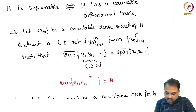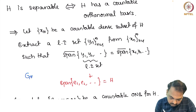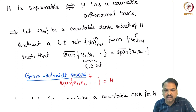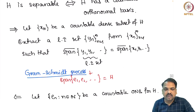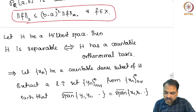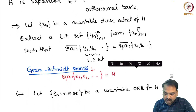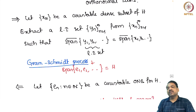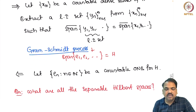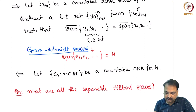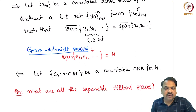From the dense subset we extract a linearly independent set Y_n such that their spans are the same. Using the Gram-Schmidt process, we get an orthonormal set E1, E2, so on, such that span{E1, E2, ...} equals span{Y1, Y2, ...}. The closure of that span equals H, giving a countable orthonormal basis. Conversely, if H has a countable orthonormal basis, finite linear combinations of the E_n's with coefficients from Q plus iQ form a countable dense subset.